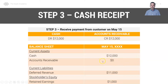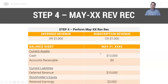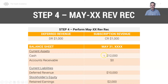Now it's May 31st — we're in month two of our software contract and we can recognize another month of revenue. So we debit deferred revenue and credit subscription revenue again, crediting revenue creates revenue on our P&L. We still have $12,000 in cash and now we're down to $10,000 of deferred revenue. We're two months into this contract, pulling $1,000 a month from our deferred revenue liability on the balance sheet over to revenue on our P&L.